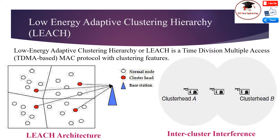Direct communication with high transmission power is used to ensure the cluster head can reach the base station. The cluster head aggregates the data of its members and transmits it to the sink or to other nodes for further relaying. Since the sink is often far away, the cluster head must spend significant energy for this transmission. For a member, it is typically much cheaper to reach the cluster head than to transmit directly to the sink. The cluster head's role is energy-consuming since it is always switched on and responsible for long-range transmission.